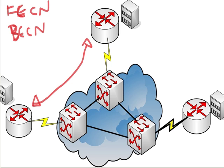Frame relay is typically implemented on a reliable network so you don't tend to have data integrity issues, but frame relay does have two congestion notification mechanisms. The first is Forward Explicit Congestion Notification (FECN), and the next is Backward Explicit Congestion Notification (BECN). FECN and BECN bits are each controlled by a single bit contained in the frame relay header. There is also a DE bit, or Discard Eligibility bit.